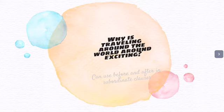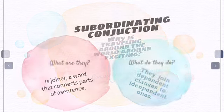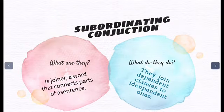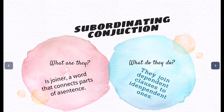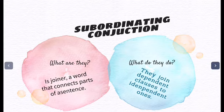This week we're going to talk about the use of before and after in subordinate clauses. First of all, we're going to talk about what are subordinating conjunctions — they are a joiner, or a word that connects parts of a sentence. What do they do? They join dependent clauses to independent clauses.